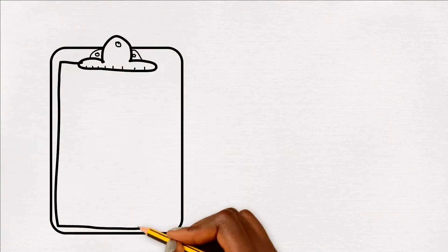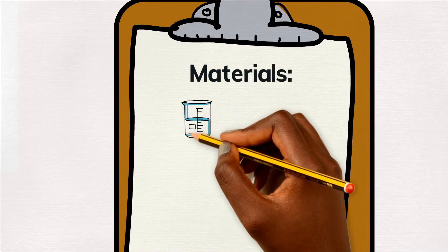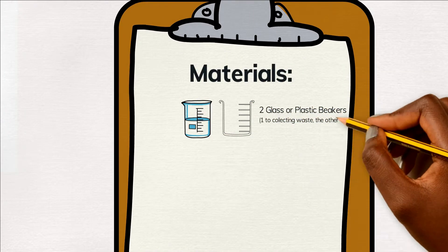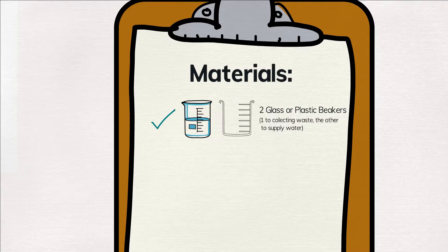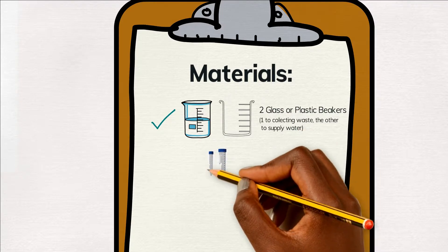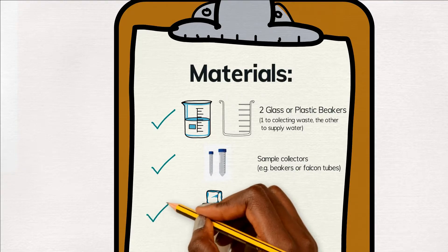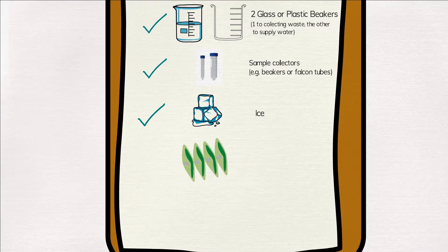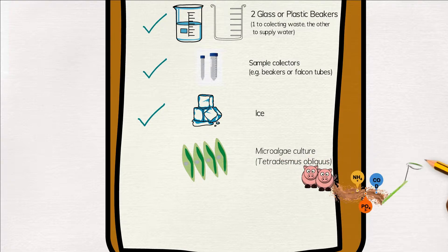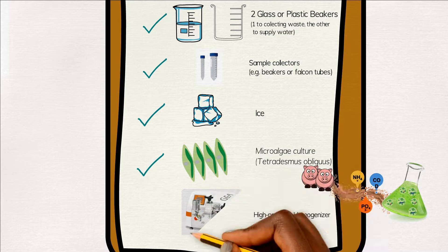For this method we will need two glass or plastic beakers, one to collect waste and the other to supply water, sample collectors that can be beakers or falcon tubes, ice, of course the microalgae culture, in this case Tetradesmus obliquus grown in piggery wastewater, and the high pressure homogenizer.